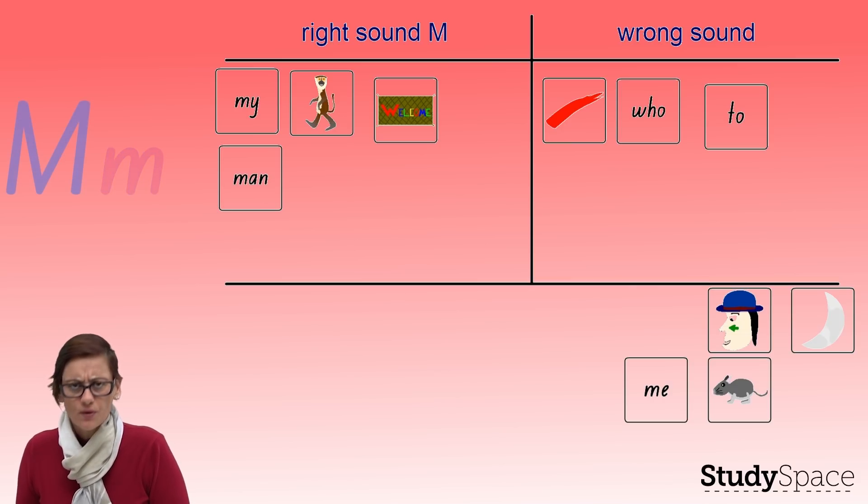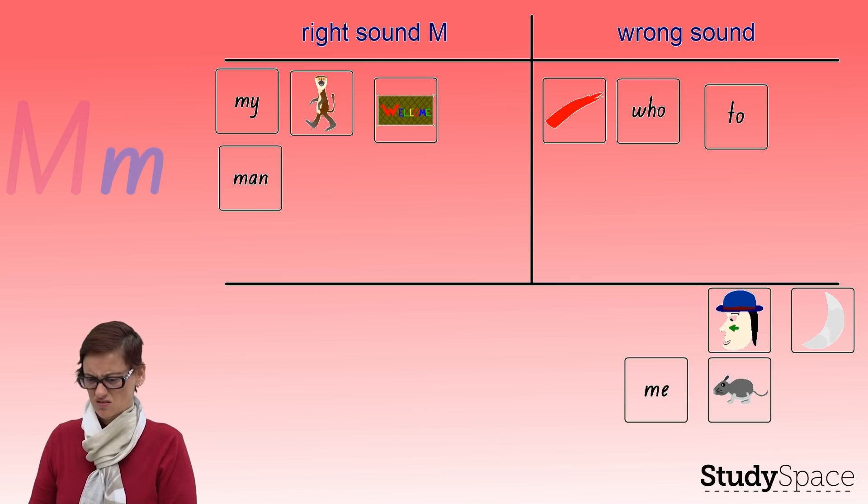All right, we've got, what's he pointing to this time, boys and girls? He's pointing to the nose, not the ear, the nose this time. Is that a right one or a wrong one? It's a wrong one, isn't it? Nose. No.